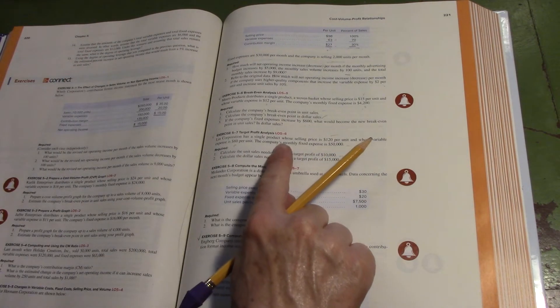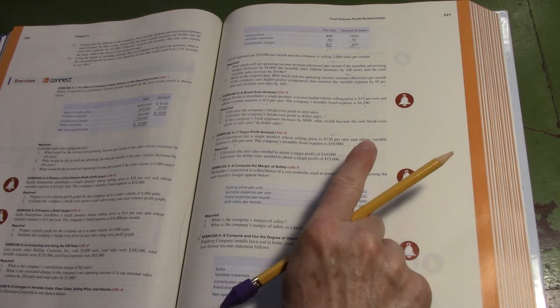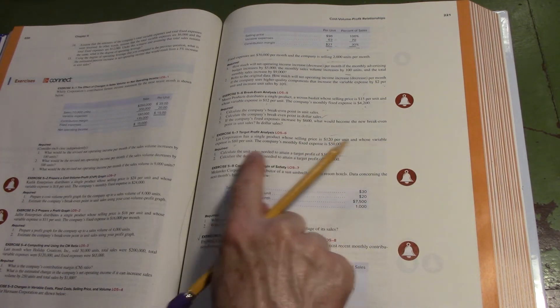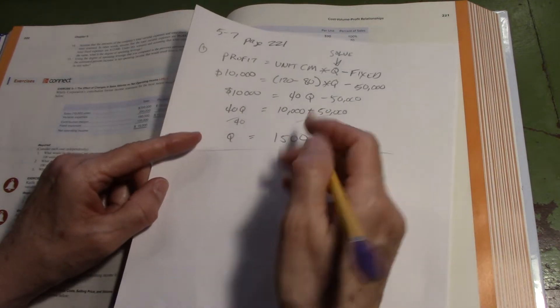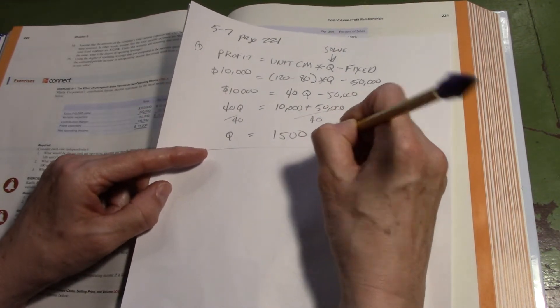There you go, there's my units. It wants to know unit sales, so there we go. That's it, we're done - 1,500 units.